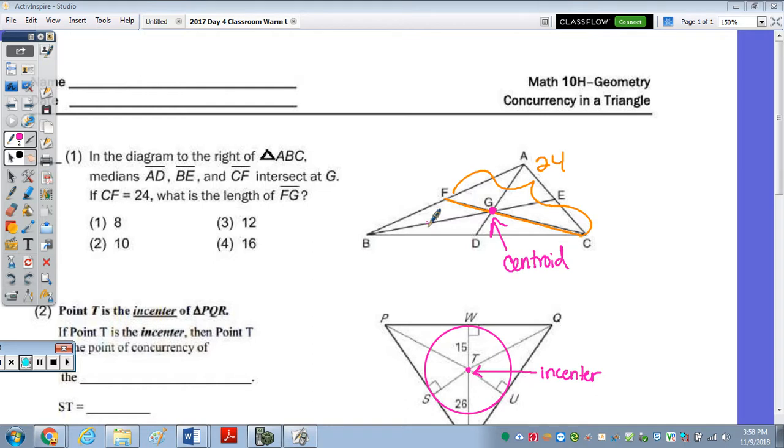In question number one, it said that you had the medians of a triangle that intersect at point G. So G is the centroid.